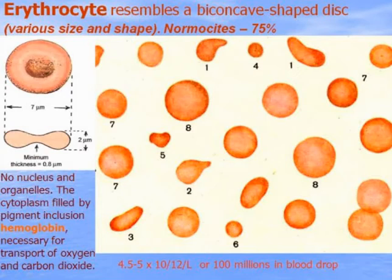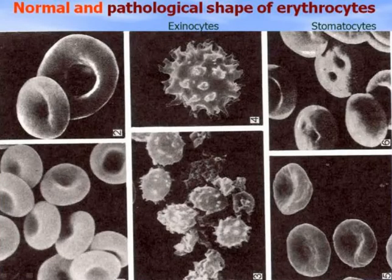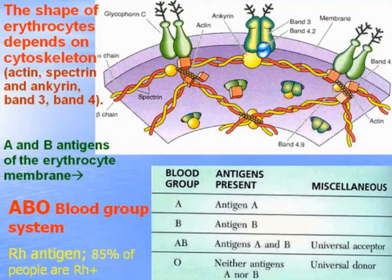The amount of erythrocytes is as many as 100 million in a blood drop. This is the normal shape of erythrocytes visible under scan electron microscopy. These are pathological shapes — erythrocytes with processes, or stomatocytes with invaginations. The shape of erythrocytes depends on the cytoskeleton, which consists of actin, spectrin, ankyrin, band 3 and band 4 proteins.